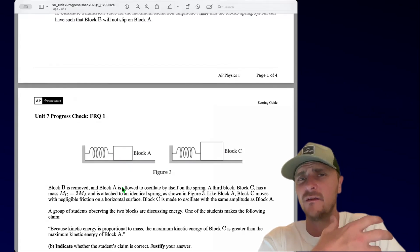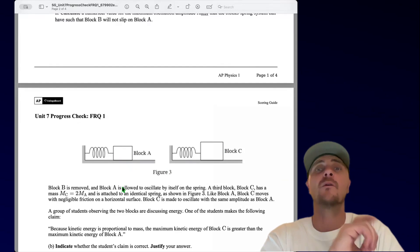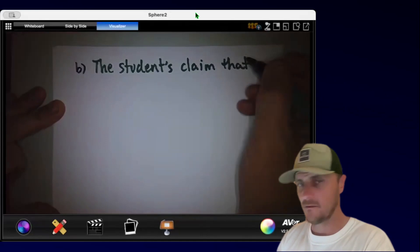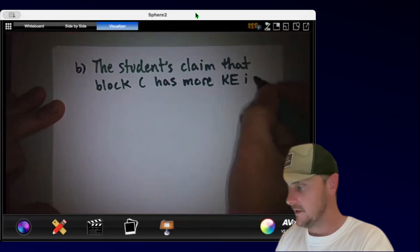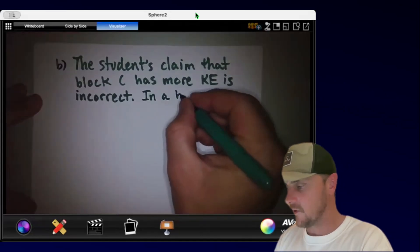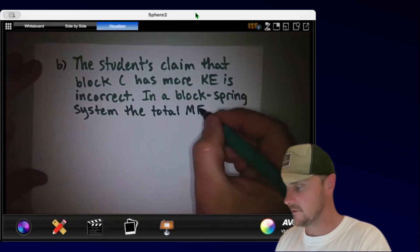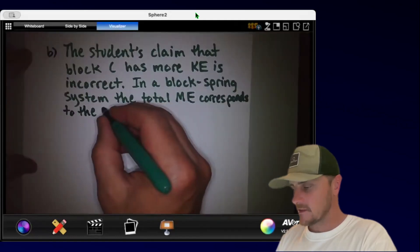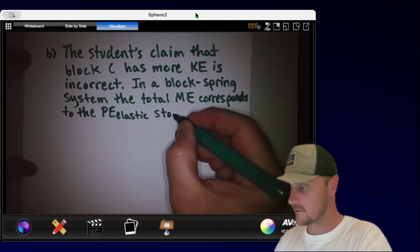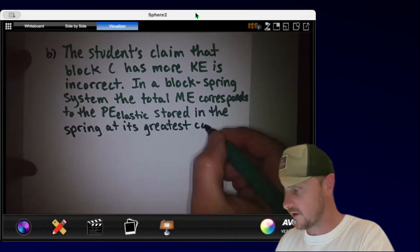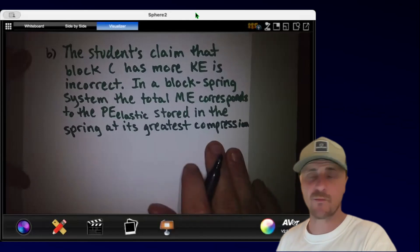Now that is a very non-straightforward way to argue this part. So there's a much better way to argue it. And here we go. I'm going to write it on the paper for you guys. The students claim that block C has more kinetic energy is incorrect. In a block spring system, the total mechanical energy corresponds to the elastic potential energy stored in the spring at its greatest compression, which is this case, we're compressing, or extension.